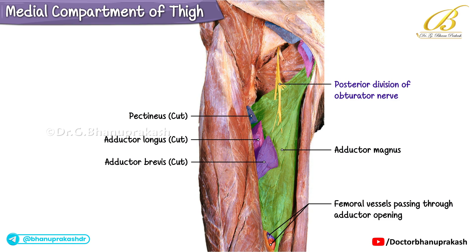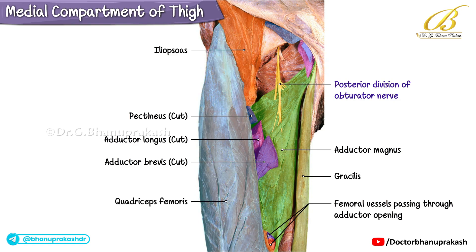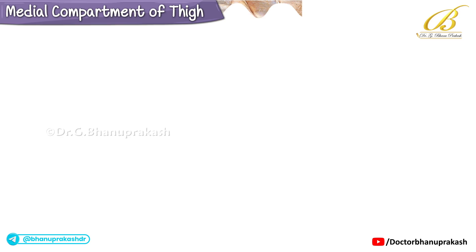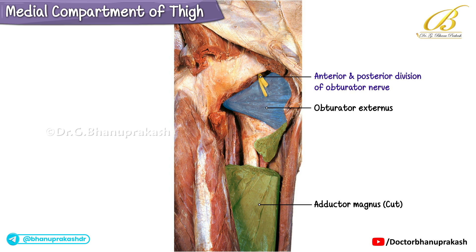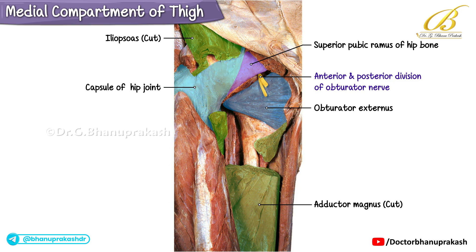Other structures visible include the gracilis on the medial side, the iliopsoas, and quadriceps femoris on the lateral side. On dissecting deeper by cutting the adductor magnus, the small conical muscle obturator externus is now exposed in the proximal region along with the two divisions of the obturator nerve. The obturator nerve emerges below the superior pubic ramus of the hip bone. The iliopsoas has also been dissected, showing its cut ends and exposing the capsule of the hip joint. A small portion of the sciatic nerve can be appreciated lying deep, along with the tendons of the hamstring muscles.